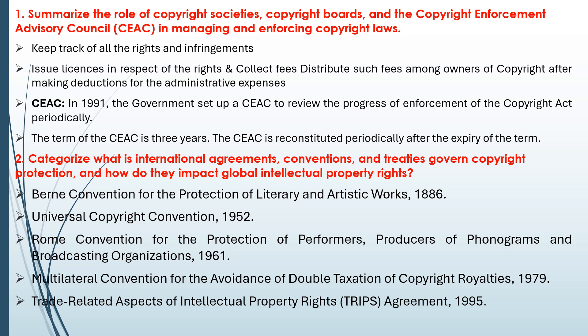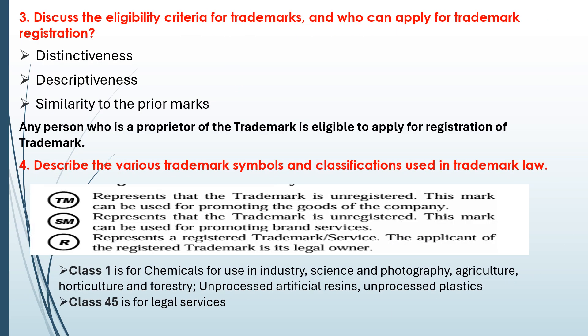The third question: discuss the eligibility criteria for trademarks and who can apply for trademark registration. The eligibility criteria include: distinctiveness — you must distinguish that the product or data you are submitting is your own and not infringed; descriptiveness — it should be briefly and clearly explained so even a third party can understand what it is; and similarity to a prior mark — you should show some connection to an existing field or product from which a copyright has been developed with your own ideas.